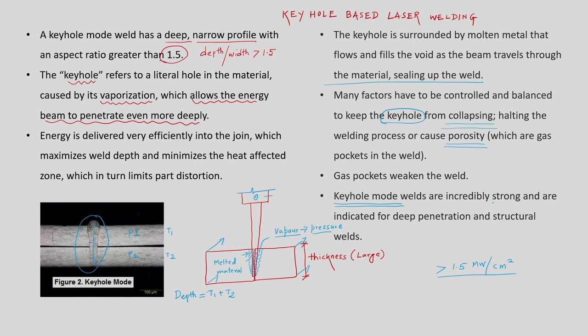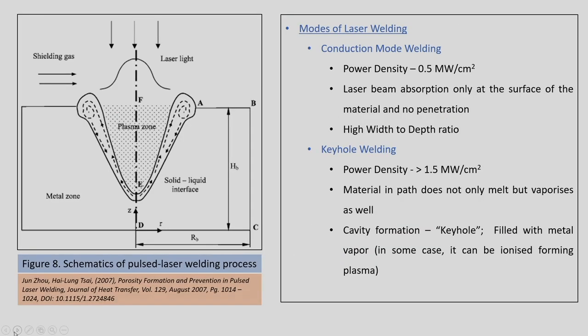Porosity defects must be controlled by managing process parameters accurately. In general, keyhole mode helps generate very strong weldments by providing deep penetration inside work parts and is widely used in structural welding applications. During the process, the plasma zone holds the molten wall at high temperature and pressure; when these reduce, the wall falls inside and mixes to produce the required weld.